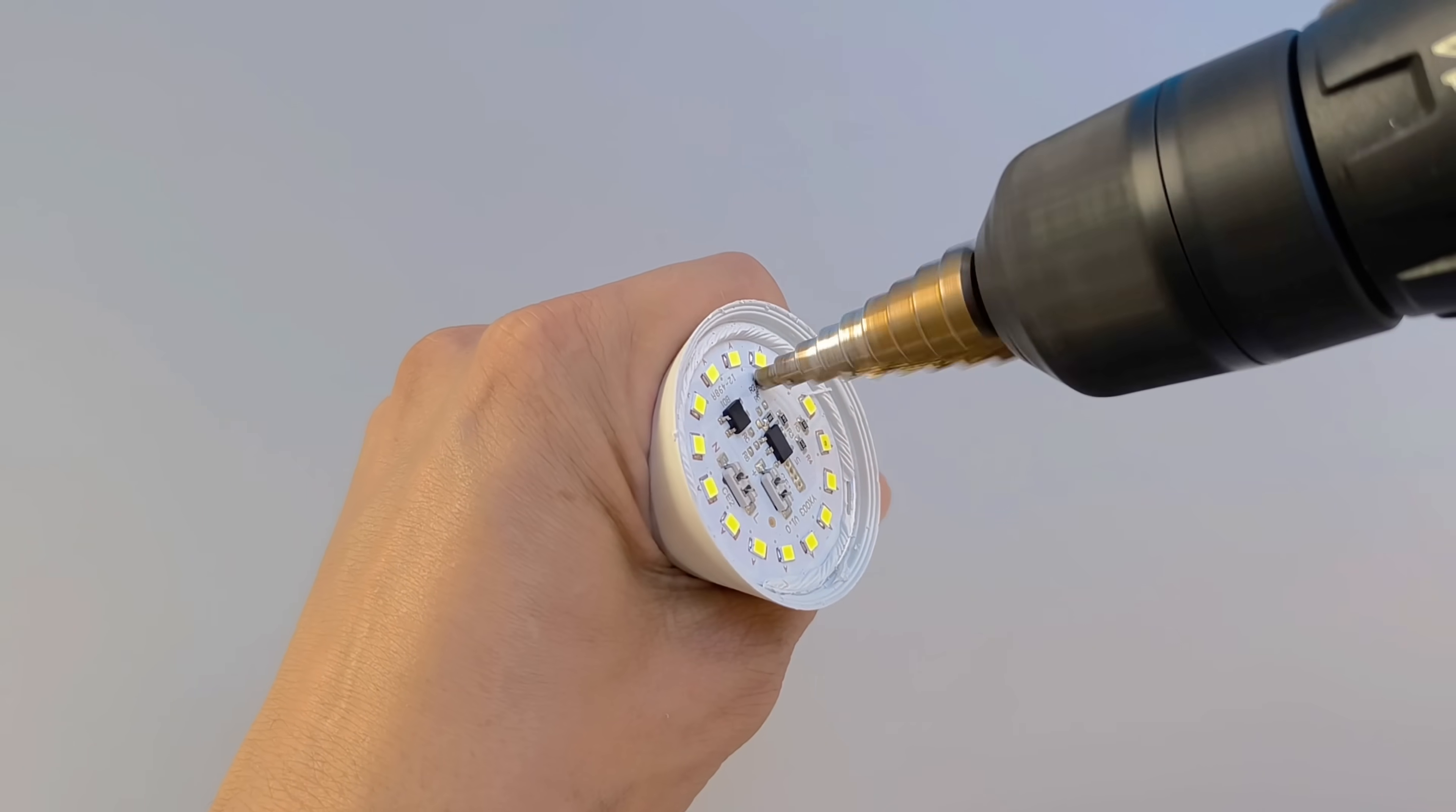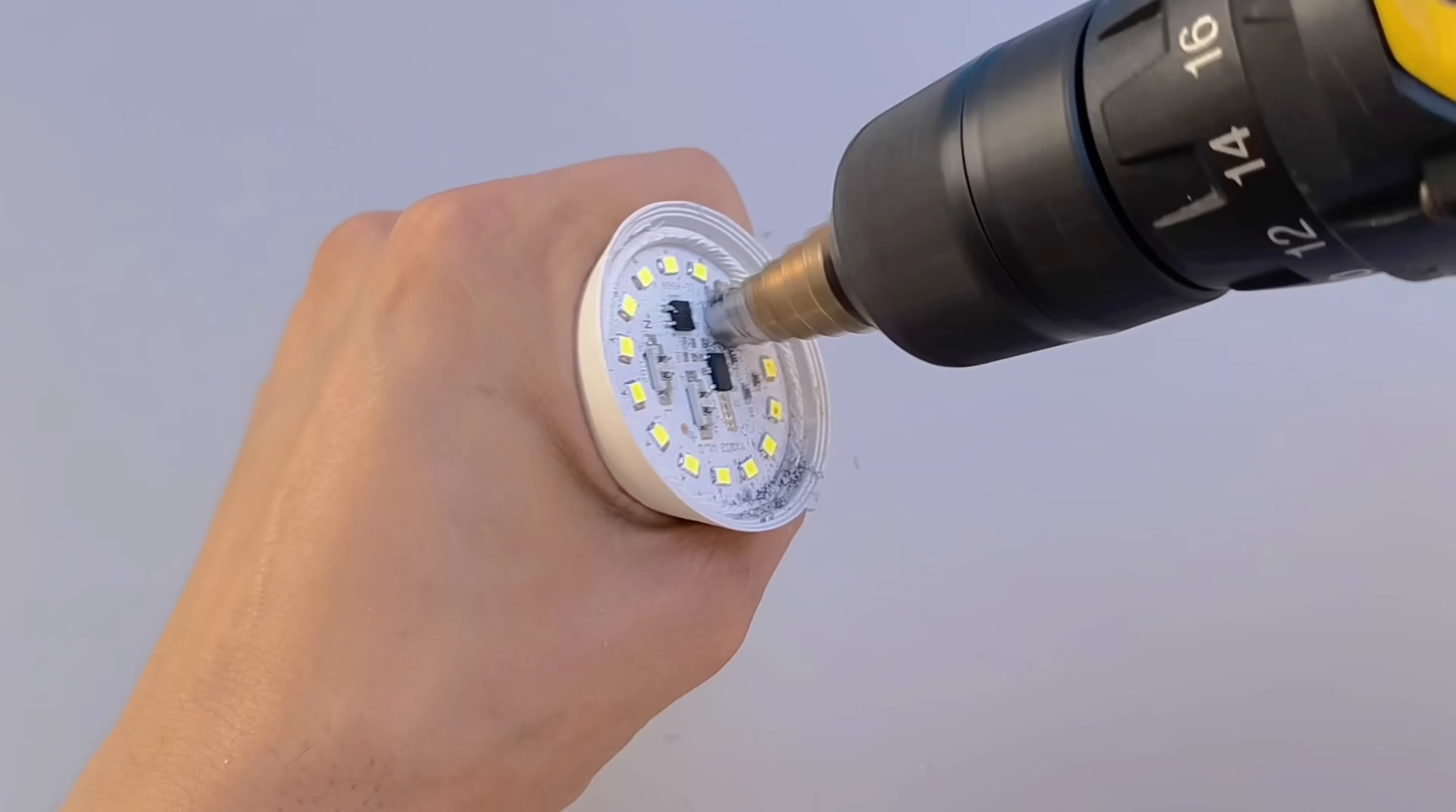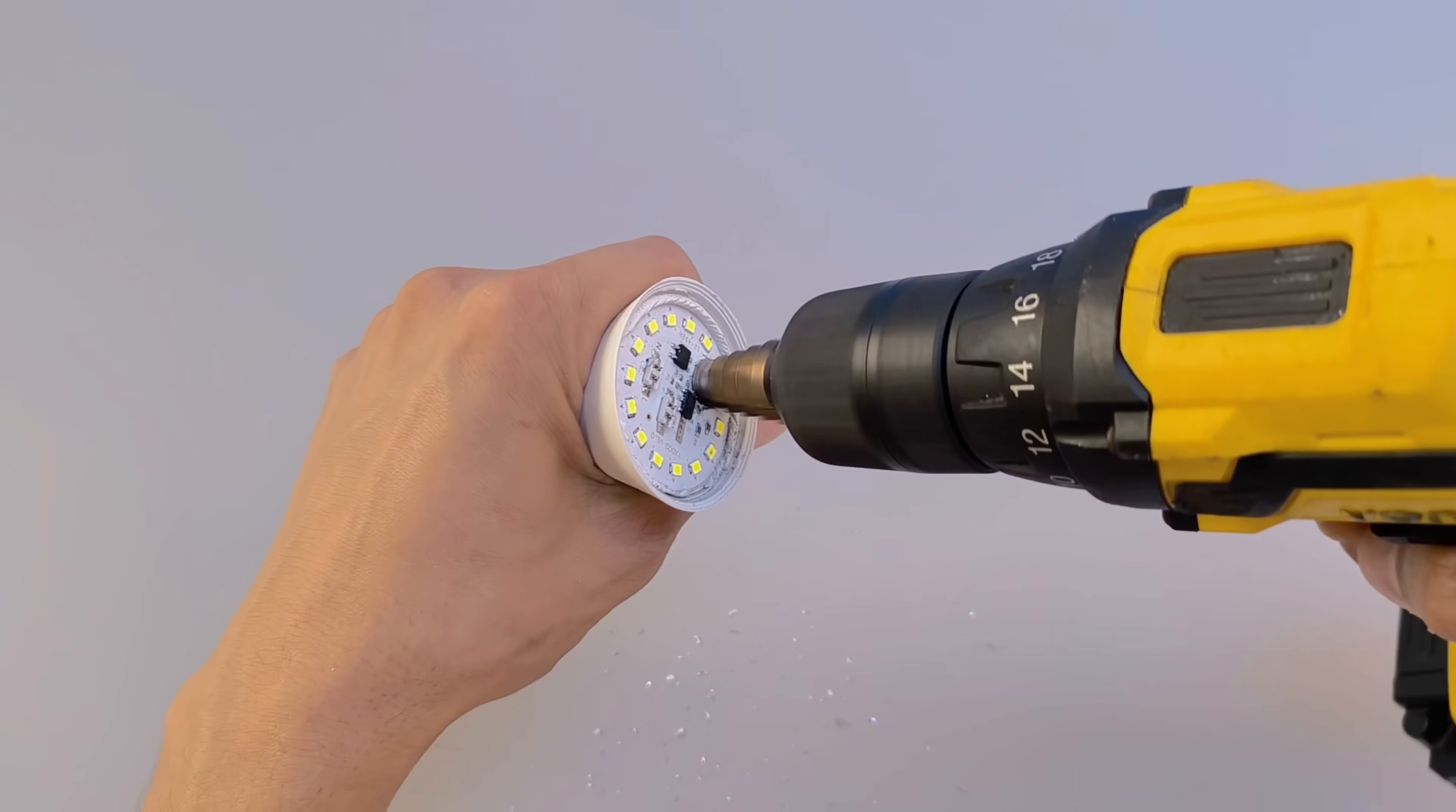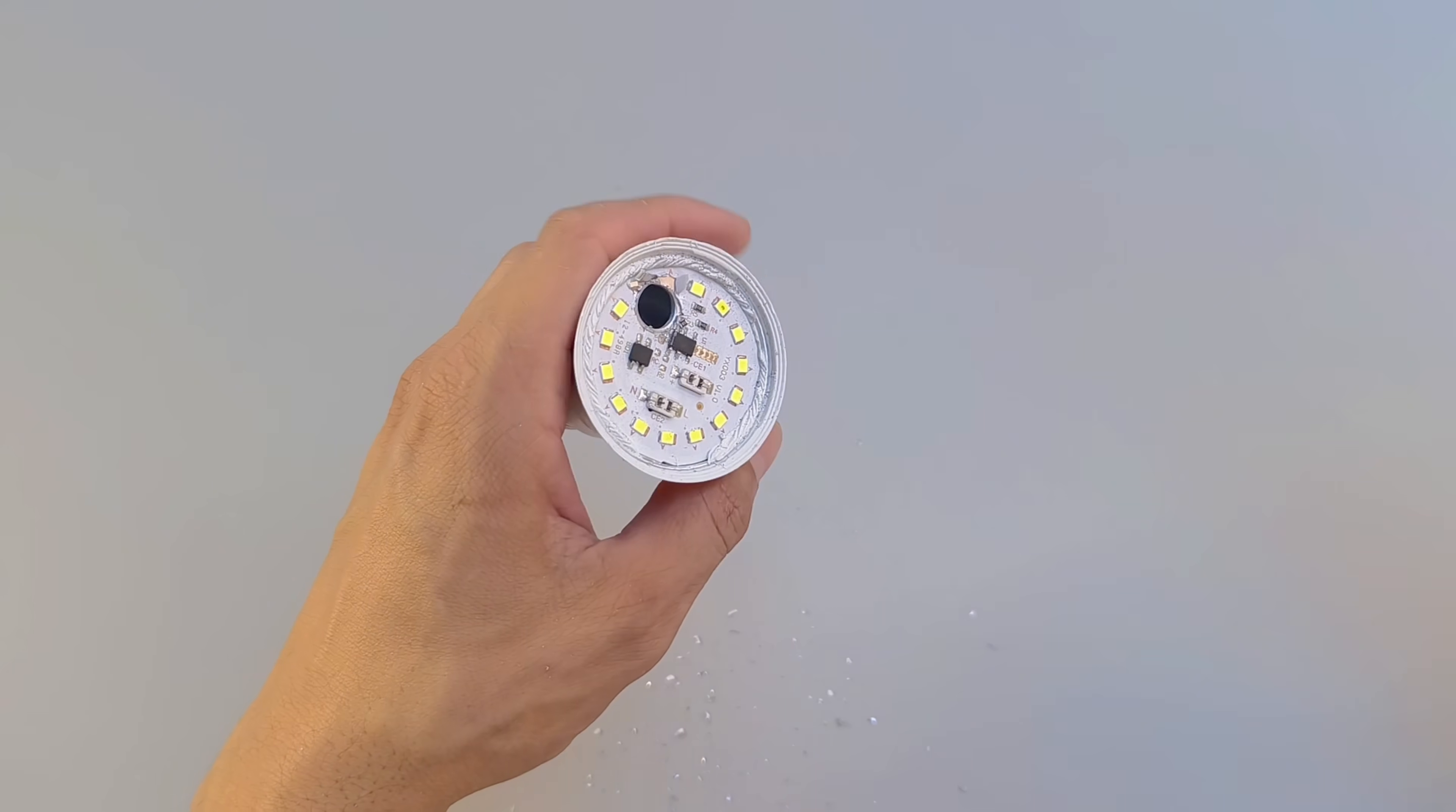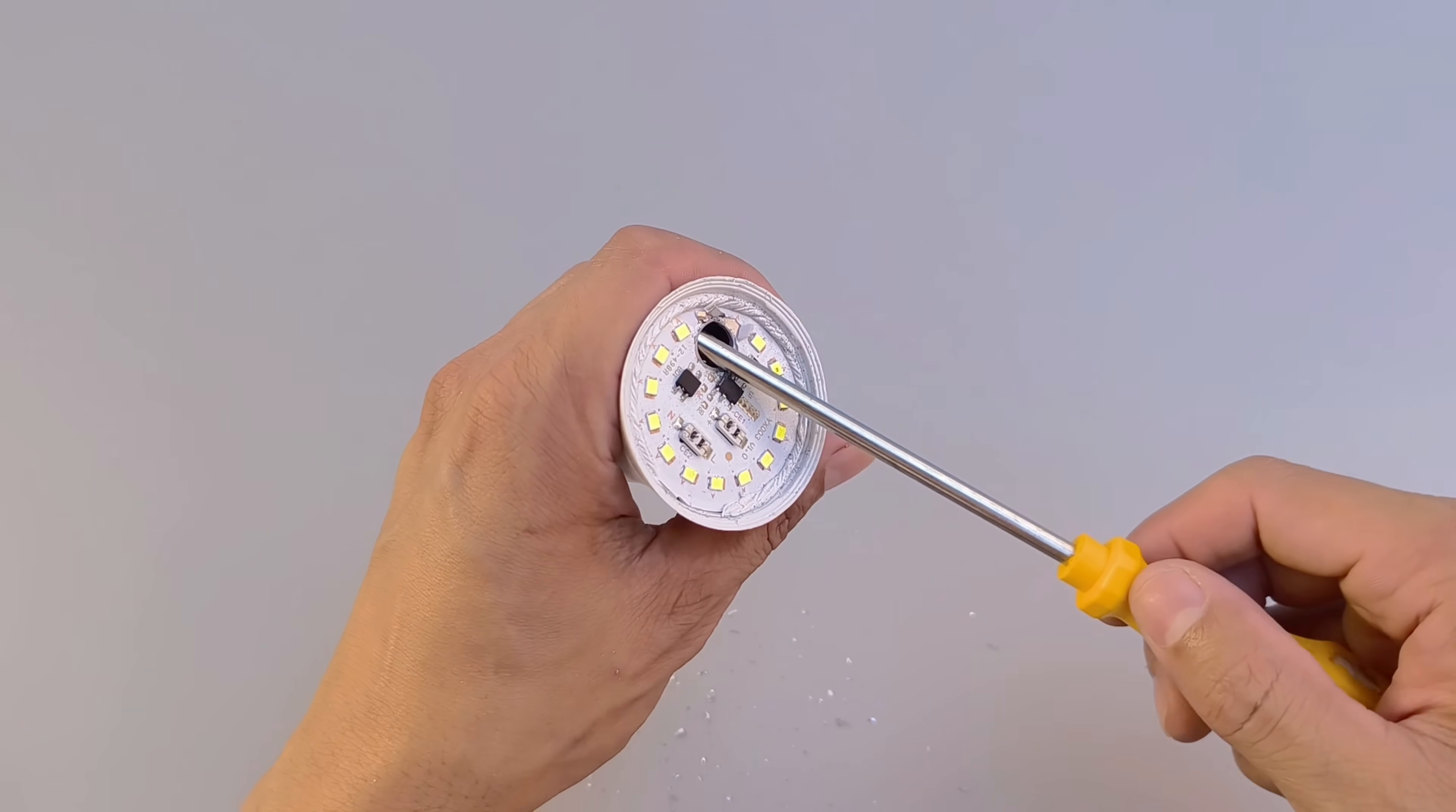Now, use a drill with a fine bit to make a precise hole in the module. This small hole is used to make it easier to remove the LED module, as it is usually well fixed internally.